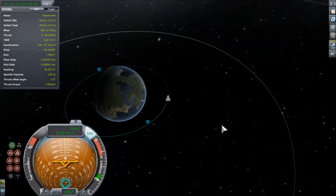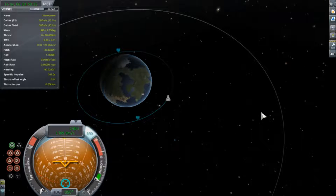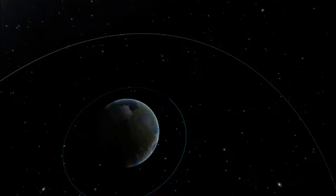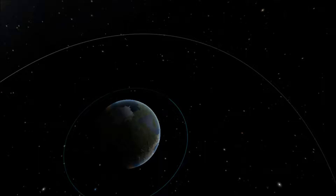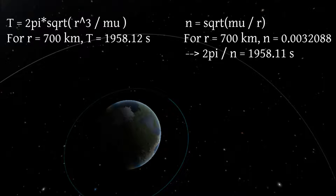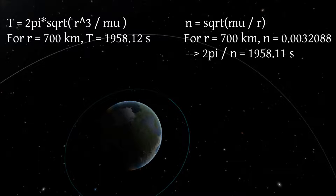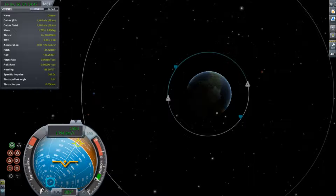Let's move on and talk about a special case of the Hohmann transfer that will come in handy when we start talking about rendezvous — we're going to talk about phasing. To talk about phasing we need to introduce a new orbital parameter: the mean motion. The mean motion is the angular speed of a satellite averaged over the period of one orbit. We take the gravitational parameter, divide it by the cube of the semi-major axis, and take the square root to get our average angular speed in radians per second. For a 100 kilometer altitude satellite in a circular orbit, the period is 1,958.12 seconds, and the mean motion is 0.0032088 radians per second — dividing 2π by the mean motion gives a period of 1,958.11 seconds, basically the same thing.